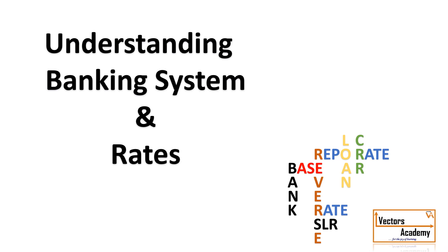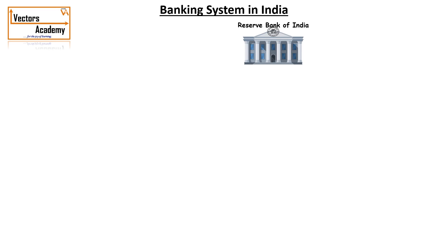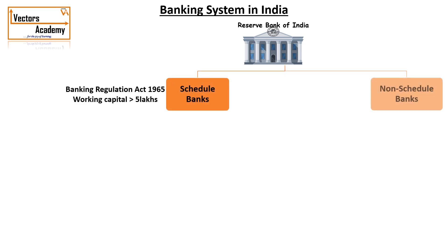Now let us understand the rates involved in the banking system. Let us first have a look at the banking system of India. All the banks in India come directly under the Reserve Bank of India, that is the RBI. There are two major types of banks: one is the scheduled bank and the other is the non-scheduled banks.